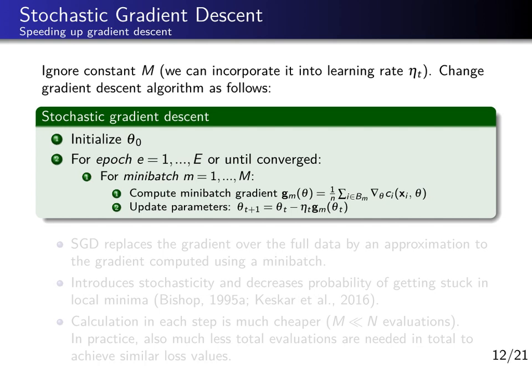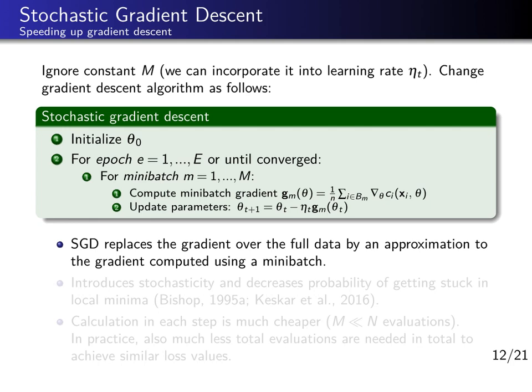The key difference is that in stochastic gradient descent we make parameter updates within each epoch — within the same amount of data seen by a single iteration of straightforward gradient descent. The full-data gradient is replaced by a mini-batch approximation to that gradient.